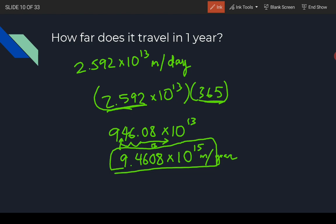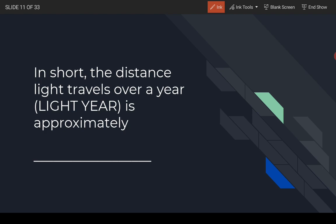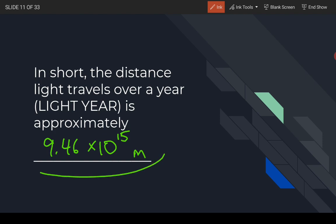That is more than a trillion — I always forget what comes after trillion. That is our final answer for this question. So when it says 'the distance light travels over a year' — in other words, a light year — it's approximately 9.46 times 10 to the 15th meters. Even though it says 'light year' and sounds like a unit of time, a light year is actually a measure of distance: how far light travels in a year.